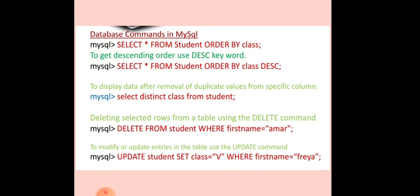Today we learn about the ORDER BY clause. If we want to arrange the values of a column in some order, either ascending or descending, we use the ORDER BY clause. To get descending order values we use the DESC keyword, and for ascending order we use the ASC keyword. Suppose we want to display elements in descending order, then we write: SELECT * FROM student ORDER BY class DESC.